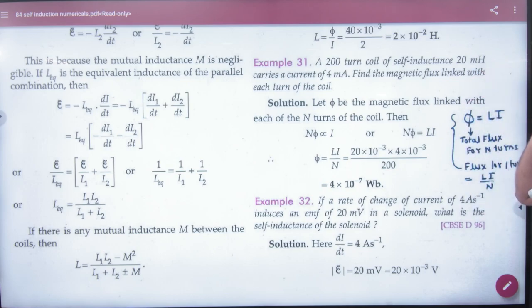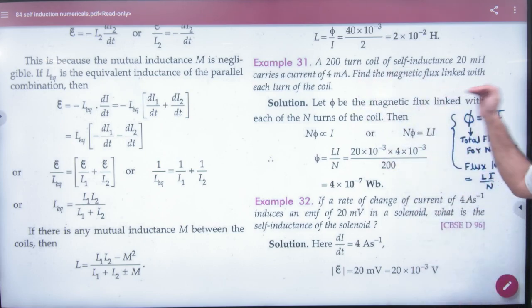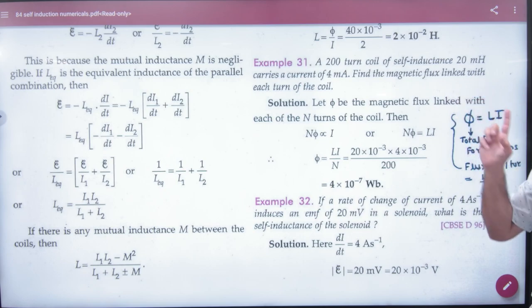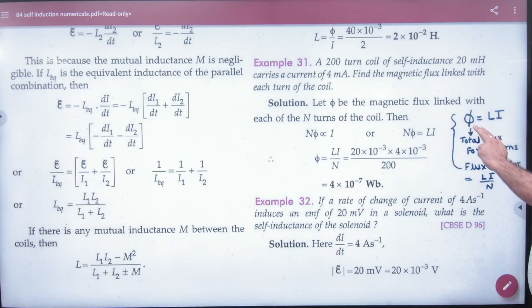Carries a current of 4 milliampere. Find magnetic flux linked with each turn of the coil. If you use this formula Φ = Li, this formula gives you total flux. But you have to find flux per turn, so the answer is Li divided by number of turns N. Flux per turn can be calculated.